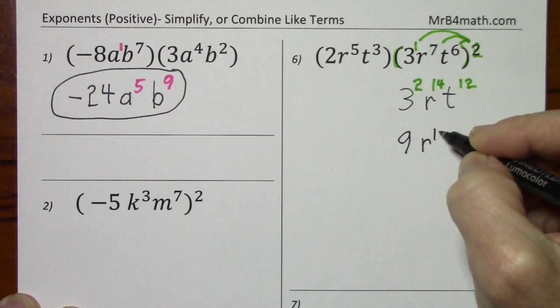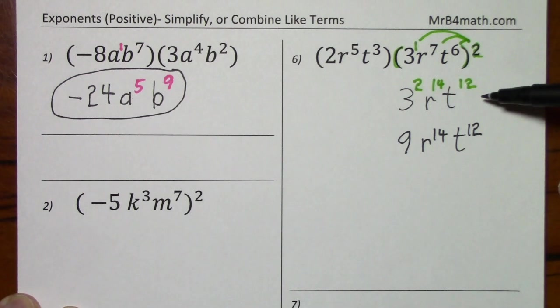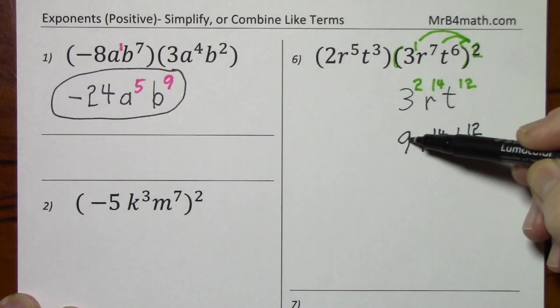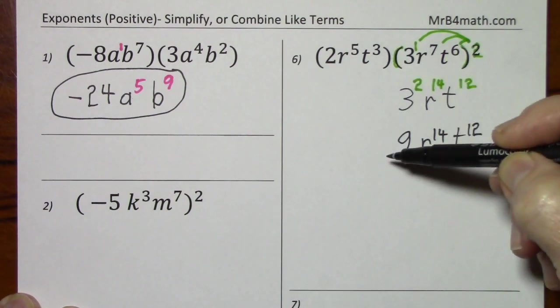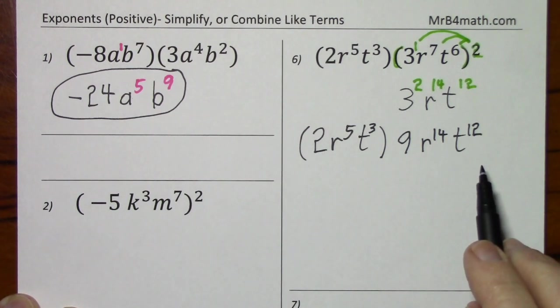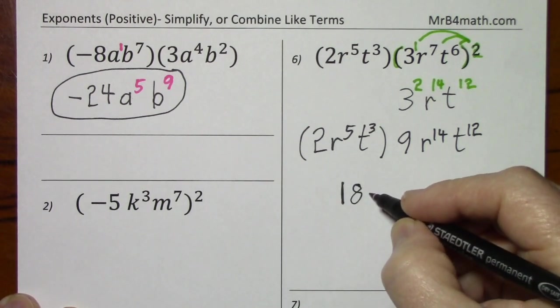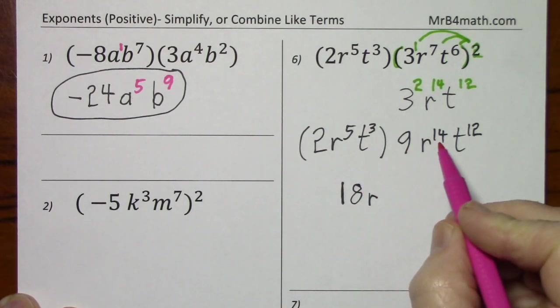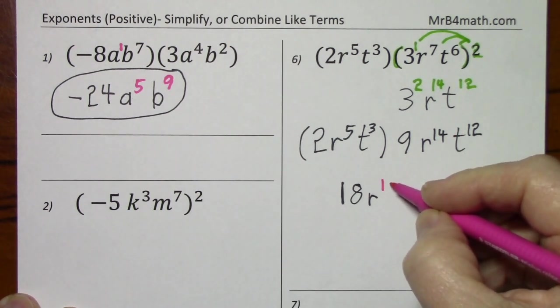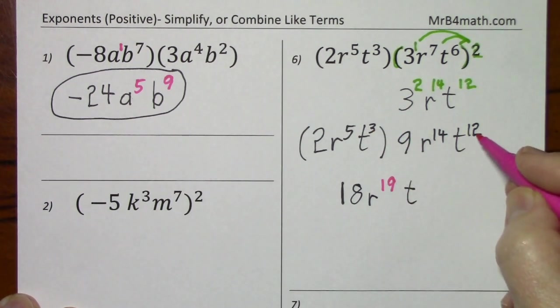So this is going to give us, I've just included this step to be very explicit how we go from 3 to 9. So now I'll bring down what I haven't touched, and now it's back to straightforward multiplication. So 2 times 9, R to the 5 plus 14, T to the 3 plus 12.